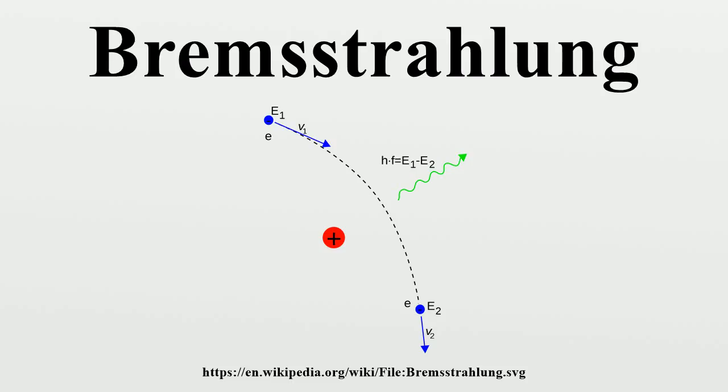Polarizational Bremsstrahlung is the radiation emitted by the target's atomic electrons as the target atom is polarized by the coulomb field of the incident charged particle. Polarizational Bremsstrahlung contributions to the total Bremsstrahlung spectrum have been